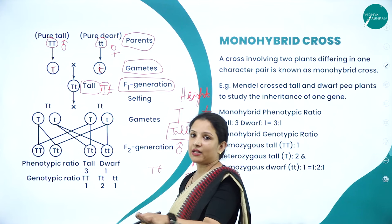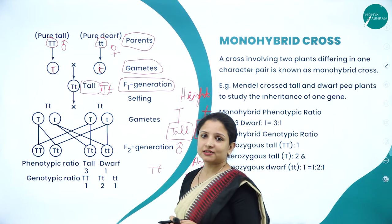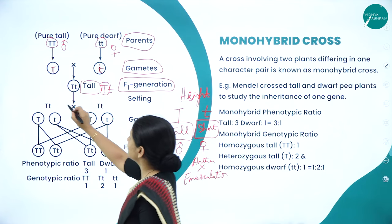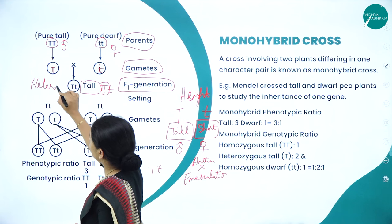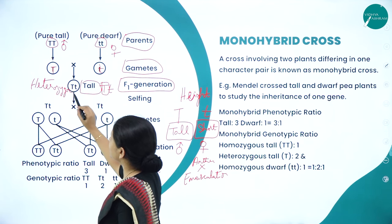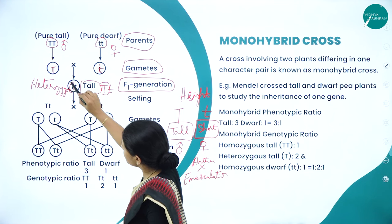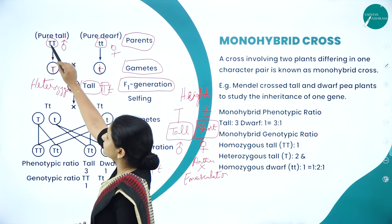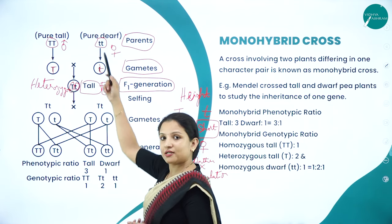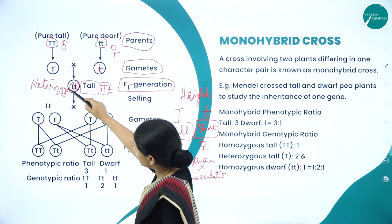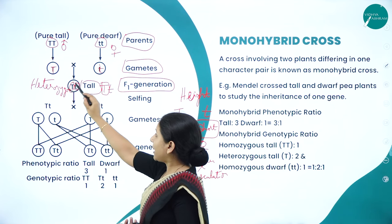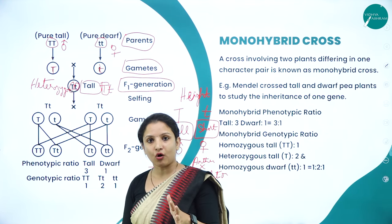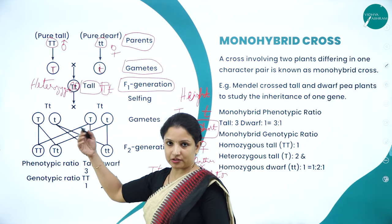He was not satisfied with one experiment, so he took all the tall F1 plants for further study. This F1 generation is heterozygous — it has one dominant gene (capital T) and one recessive gene (small t). The parents were homozygous: TT (both dominant) or tt (both recessive). But here capital T and small t together make it heterozygous. In heterozygous plants, all are tall because the dominant gene is always expressed.